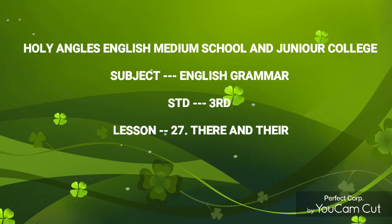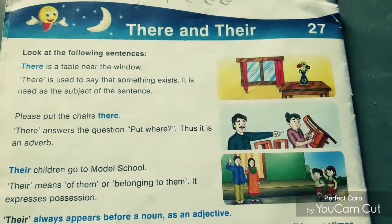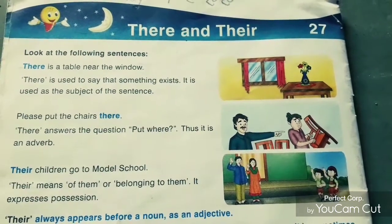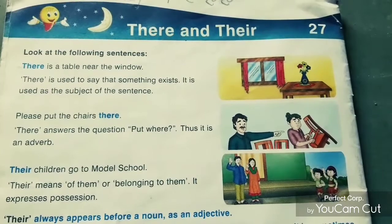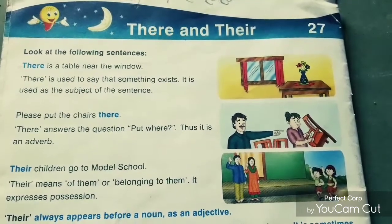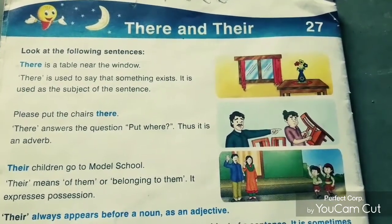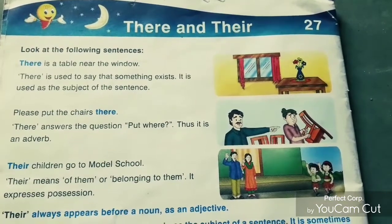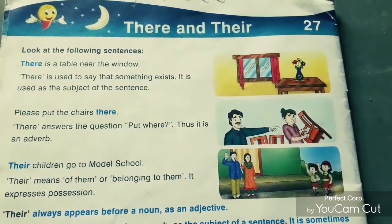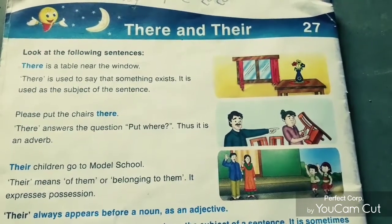Hi kids, welcome to Third Standard English Grammar class. Today I come with lesson number 27. The lesson name is 'there' and 'their'. Look at the spellings — they are different, but their pronunciation is the same, so they are homophones. But their inner meaning is different.